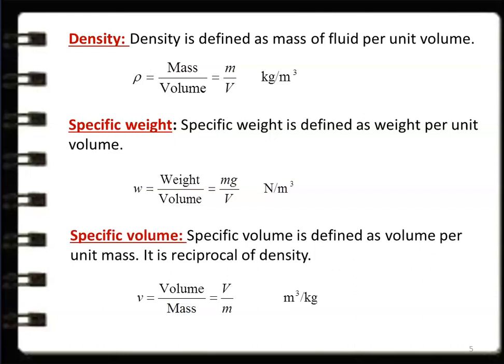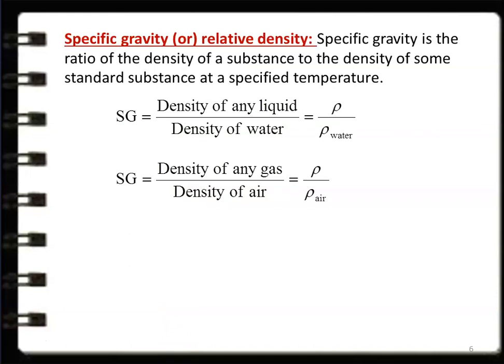Specific volume is one divided by density — volume divided by mass (V/m), or 1/density. Specific gravity, or relative density, is the ratio of the density of a substance to the density of some standard substance at a specific temperature. For liquids, water is the reference fluid; for gaseous substances, air is the reference fluid. So specific gravity is density of any liquid divided by density of water, or density of any gas divided by density of air (rho/rho_air).